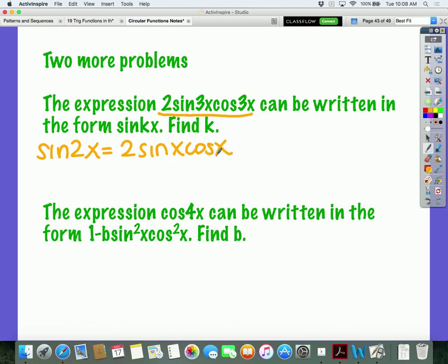The only difference between the original double angle identity for sine is what? What's the difference between this in the orange and what I underlined? There's a 3x instead of just a regular x, correct? So basically this expression can be rewritten in an altered double angle for sine. So instead of it there being an x, there's a 3x. So basically everywhere I see an x, I'm going to replace it with the 3x.